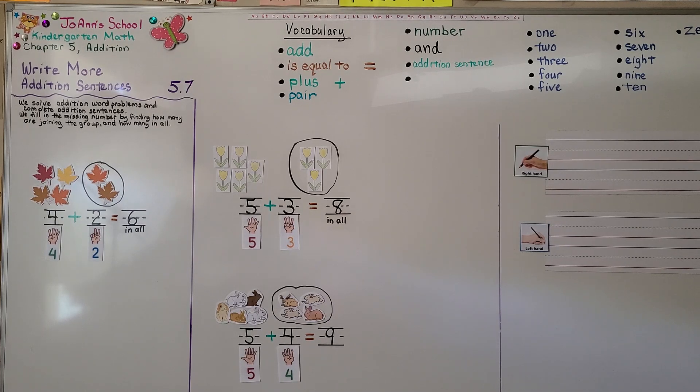We can find how many objects are joining the group. That's the objects we circle and how many there are in all. We can count both groups to find how many in all.